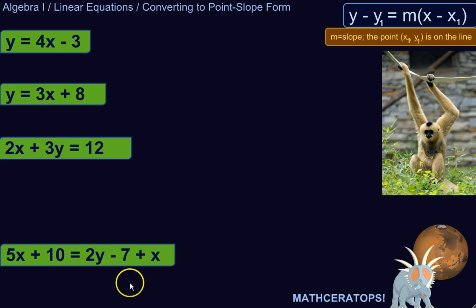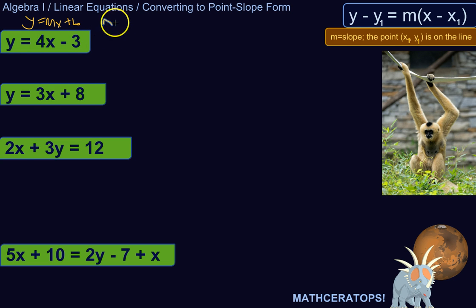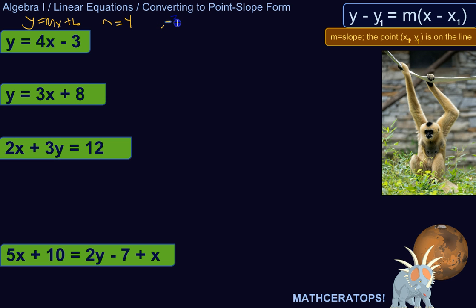Let's convert these equations. Converting from slope-intercept form is pretty straightforward because slope-intercept form gives you good information right away. Slope-intercept form is Y equals MX plus B. So we don't need to do too much work — this already gives us the information we need. The slope of this line is 4, and the Y-intercept is negative 3. So we know a point on the line: the Y-intercept, which is where the line crosses the Y-axis.